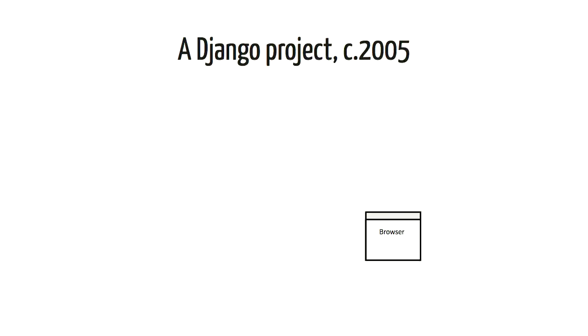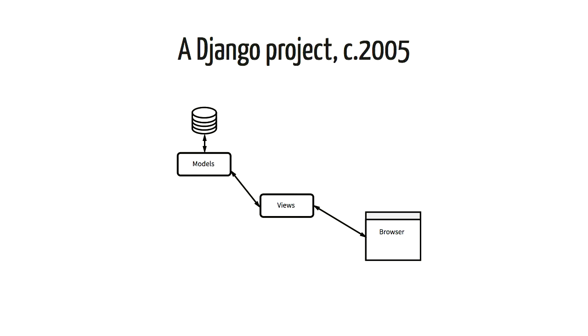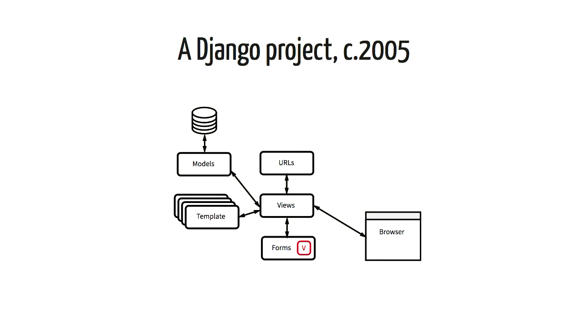Cast your mind back to the halcyon days of 2005 when Django was first released. Most websites were fairly simple affairs. You put a URL into the address bar of your browser, hit load, got a page back, clicked a link, and got another page back. The technical requirements to deliver that were, by today's standards, pretty simple. Those requirements are reflected in the major design decisions of Django and other web frameworks of that era: a models.py file, a views.py file, a forms.py, a URLs.py, and templates for each view. The most exotic thing you'd likely have in your tech stack in 2005 is something like Memcache — and even that's optional, just there as a performance kick.